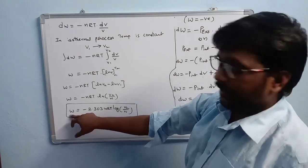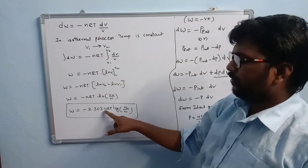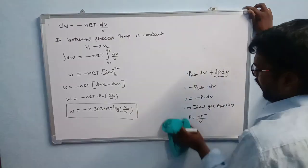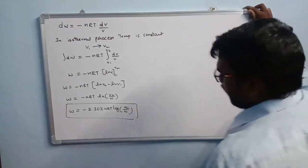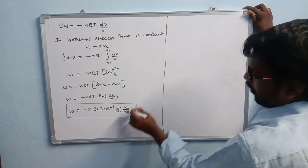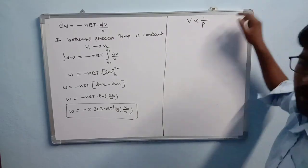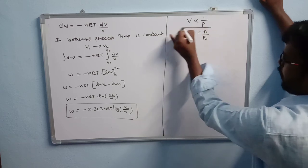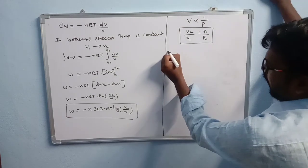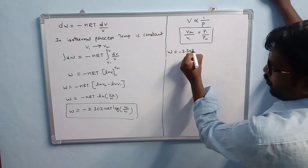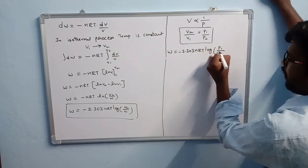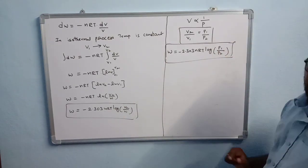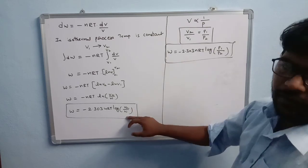This formula applies when volume change is given. If pressure change is given, we use another equation. According to Boyle's law, volume is inversely proportional to pressure (V ∝ 1/P), so V2/V1 = P1/P2. Therefore, the work done in terms of pressure is: W = −2.303 nRT log(P1/P2). These two formulas are used for finding work done in expansion.